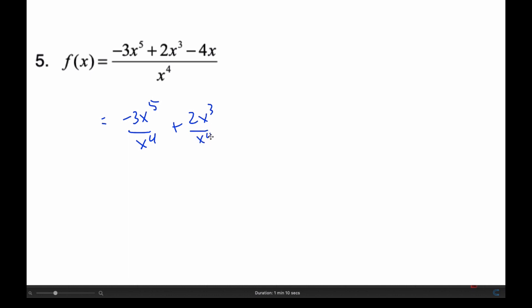Negative 3x³ over x to the 4th, plus 2x³ over x to the 4th, minus 4x over x to the 4th. And I'm going to simplify both of these. I know when I simplify this, I subtract the exponents and I get 1 on the top. So I get negative 3x.